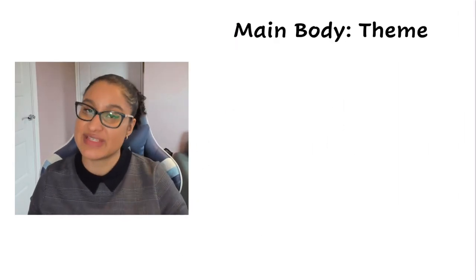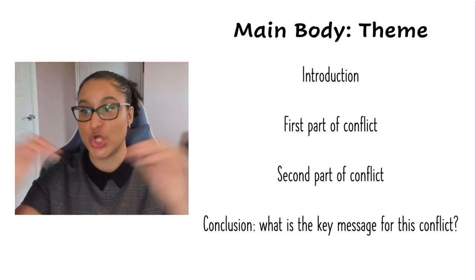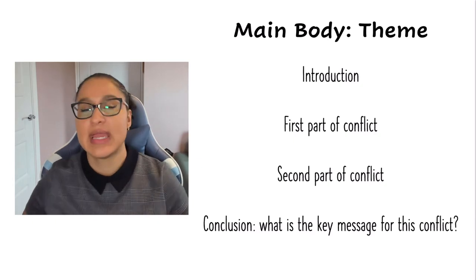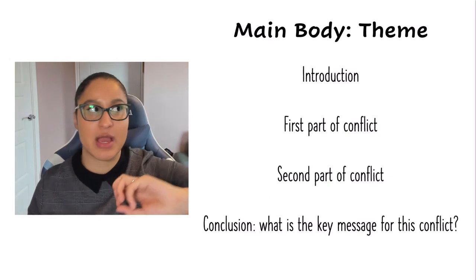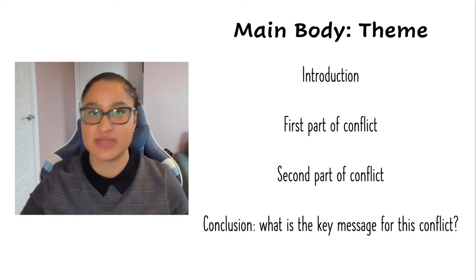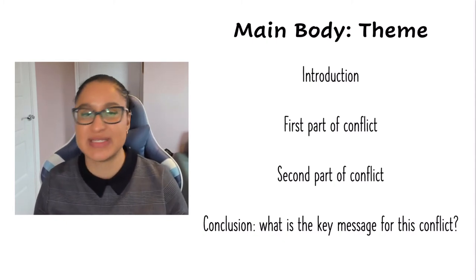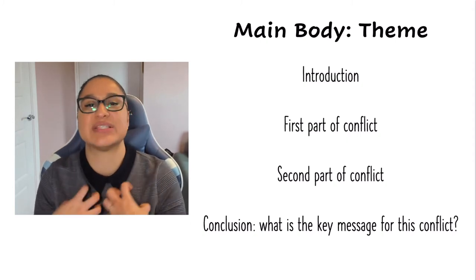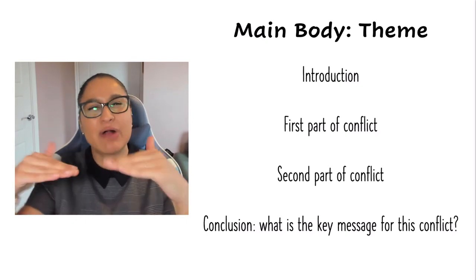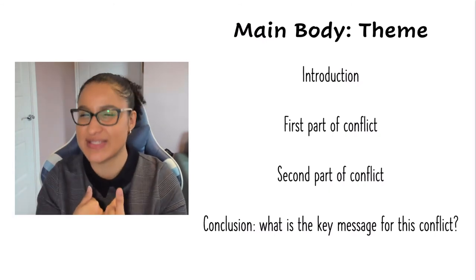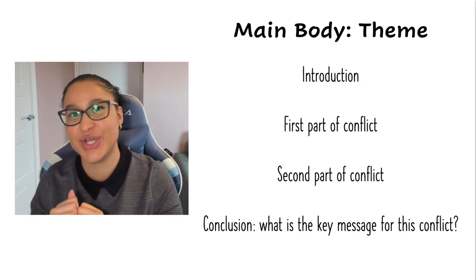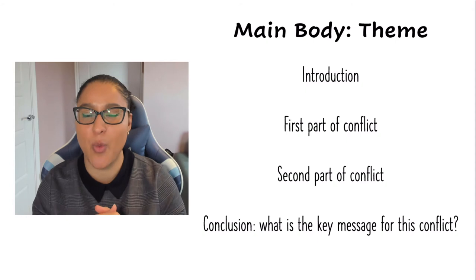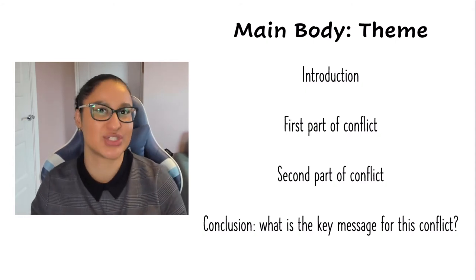When dealing with theme, we have a slightly different structure. In your introduction, you established what the conflict is in the theme — and that's how you structure your essay. You first look at the first part of the conflict (say, good kingship), then the second part (tyranny). You prove part of it is exploring what makes a good king, then prove it's also exploring the harms of tyranny. Your conclusion is: what is the key message we're supposed to be taking away from this conflict? It's almost like asking not how the conflict resolves, but whose side in the conflict are we as the audience supposed to be on — does Shakespeare want us to think tyranny is the way to go, or good kingship?